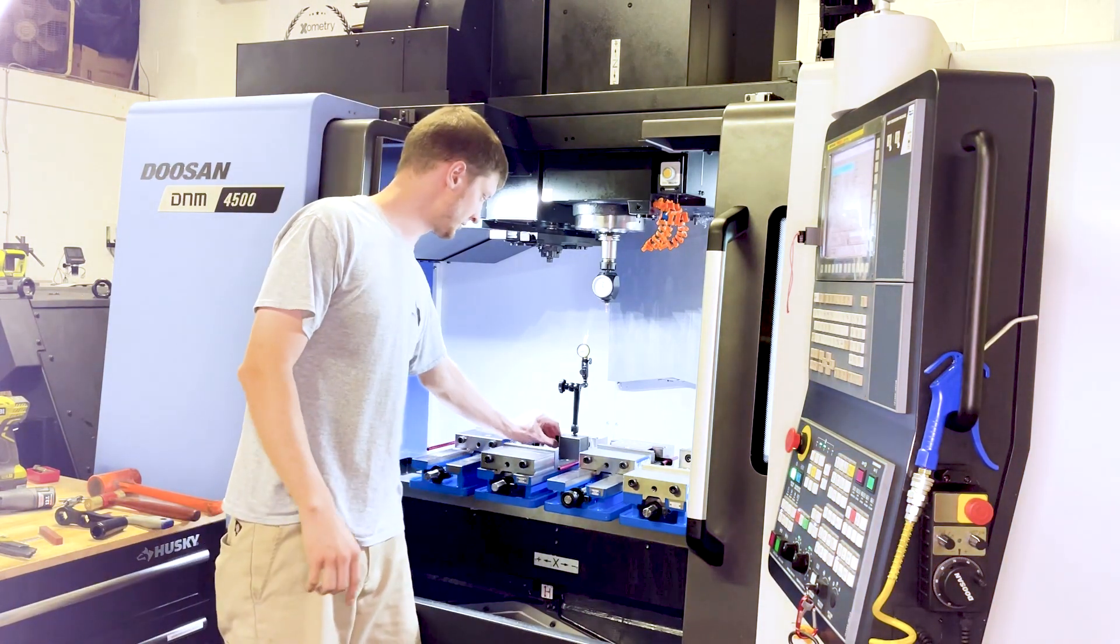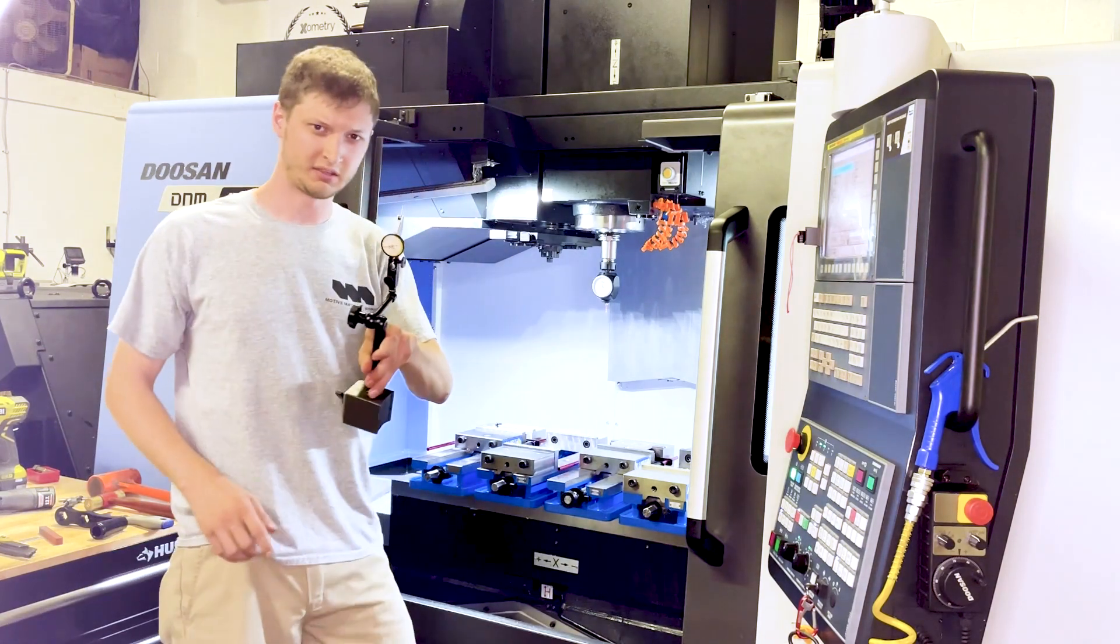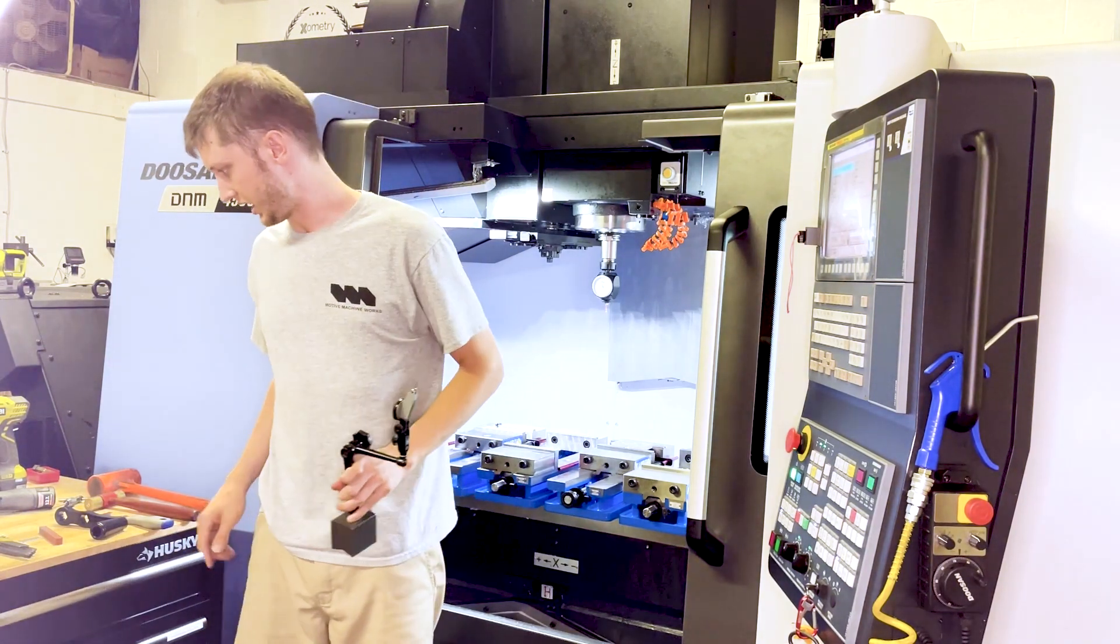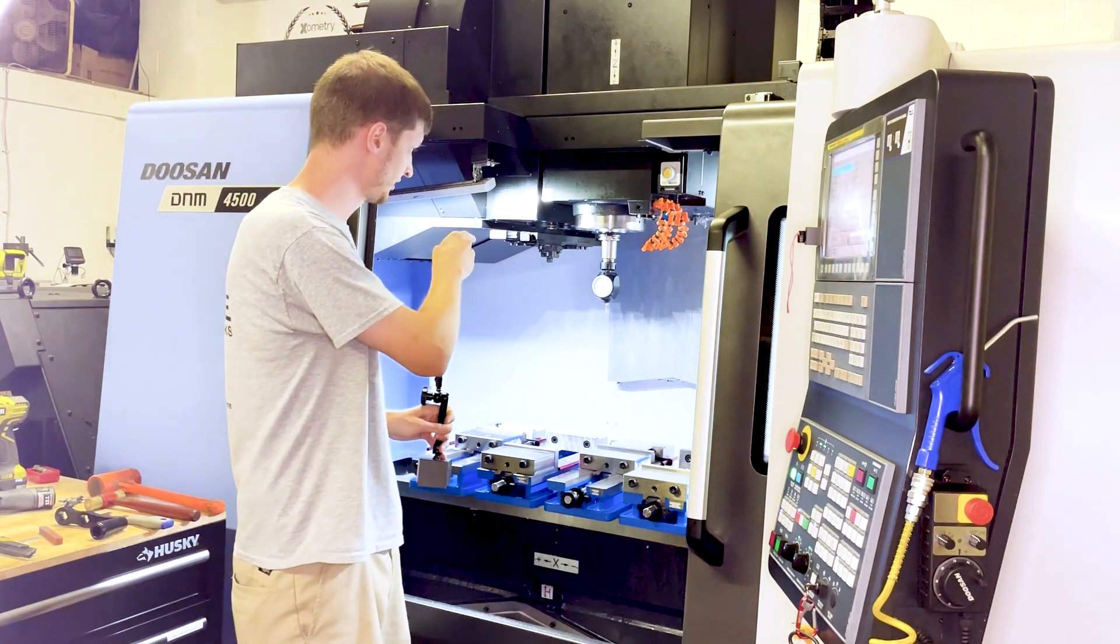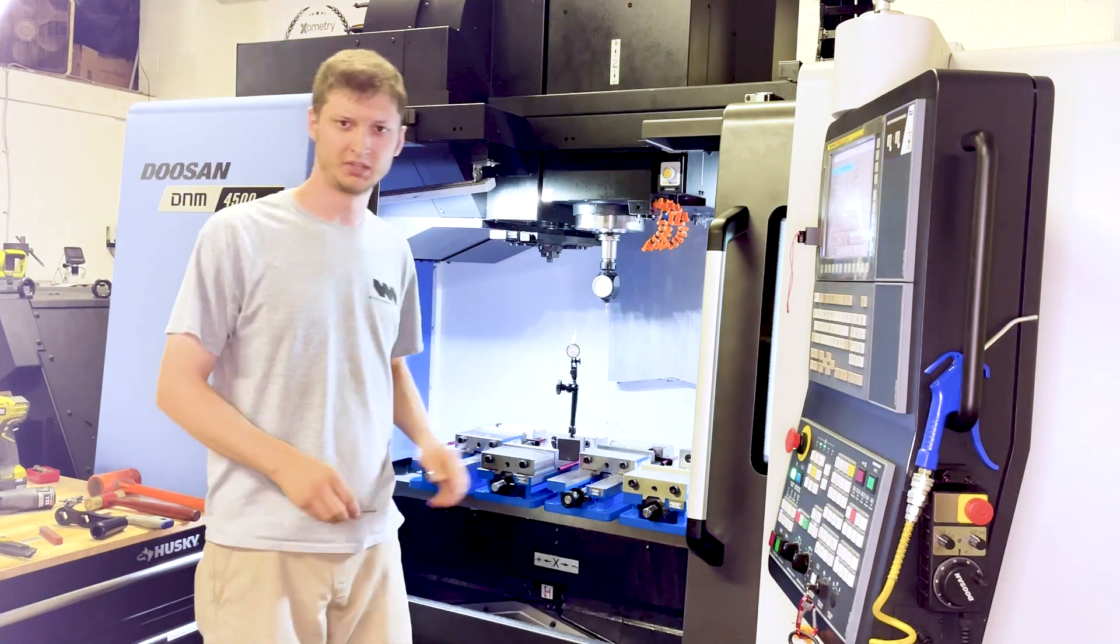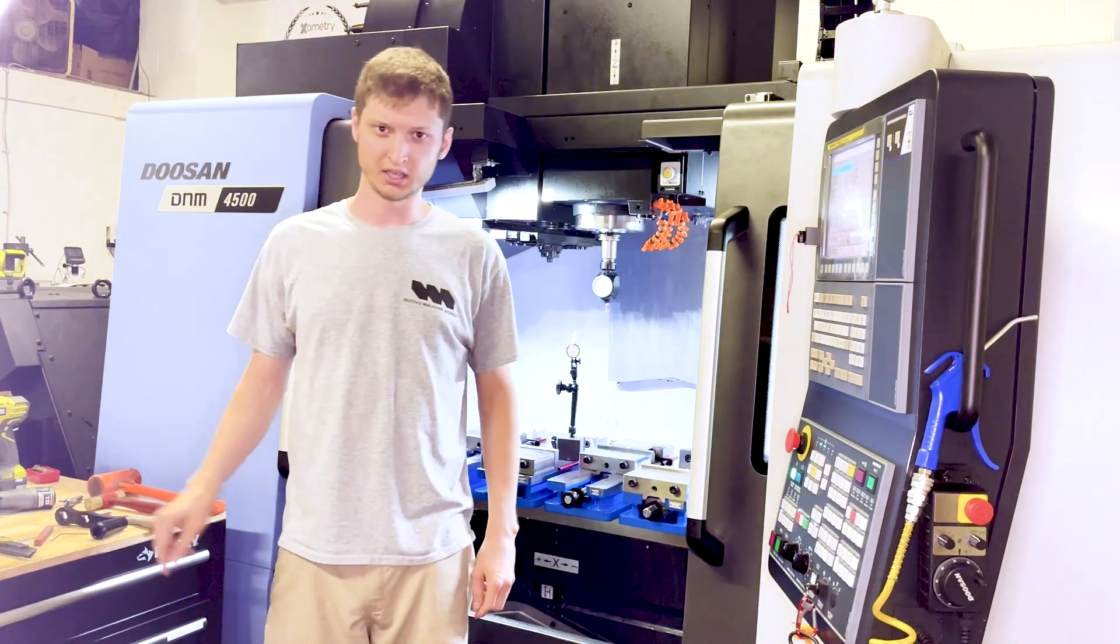All you're going to need today to do this is a magnetic base with a test indicator on it, and you're also going to need an allen key that fits inside of your either your hymer or your probe tip.